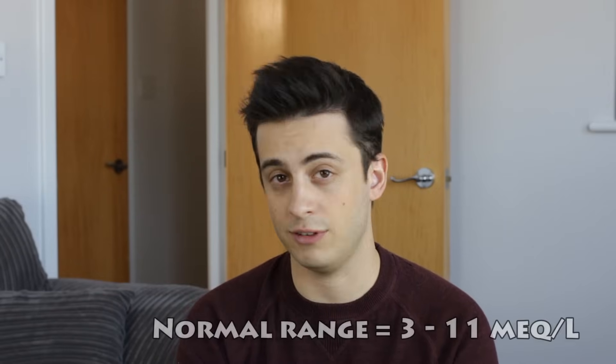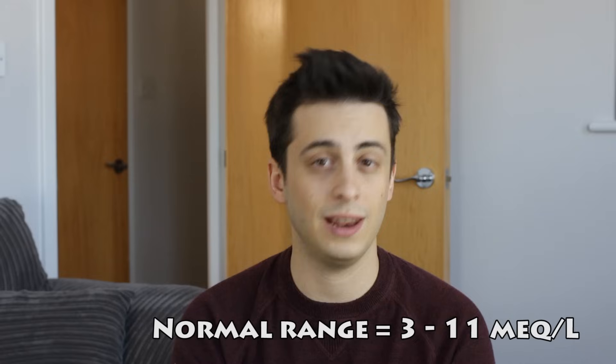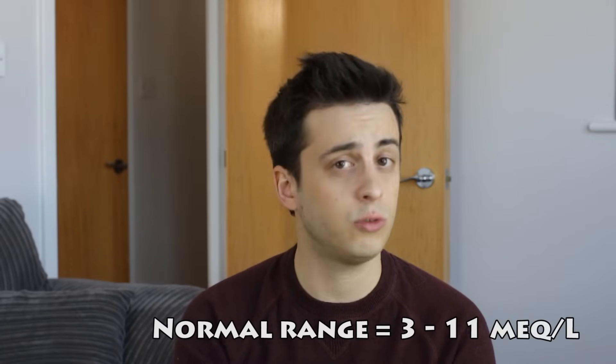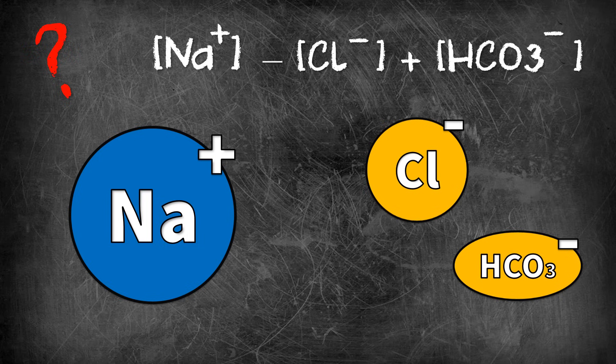The normal range is usually given at 3 to 11 milliequivalents per litre, but may vary depending on your lab and which form of the equation you use, so make sure you check. For example, some people take potassium out of the equation, correctly reasoning it accounts for only a very small proportion of the positive charge in the serum. For today though, we're going to keep potassium around mostly so it doesn't feel left out.